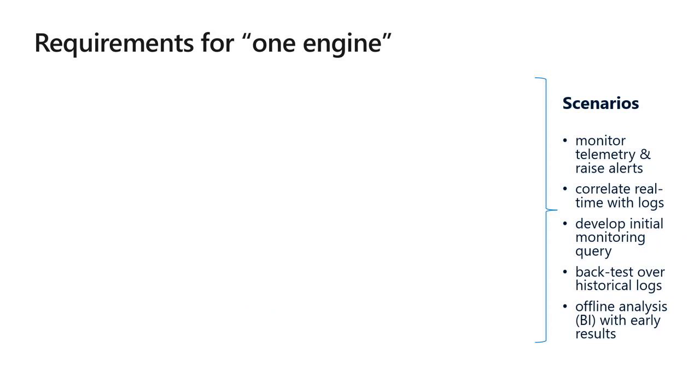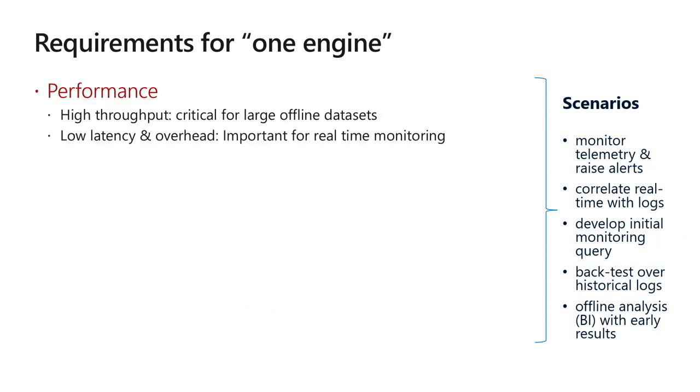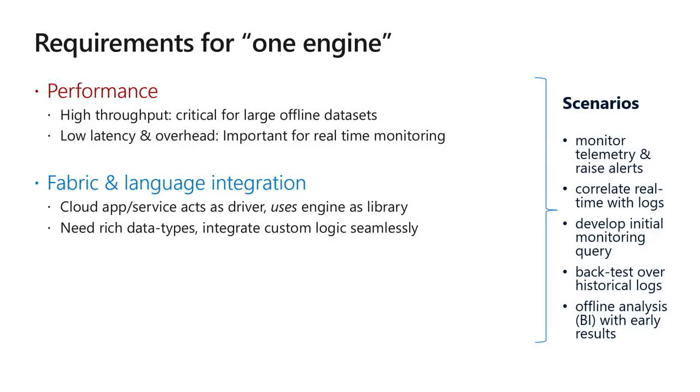We distilled out several key requirements. First is performance — important for both real-time and offline analytics, especially for offline where you take large amounts of data and want interactive responses in tens of seconds or minutes. You also want low latency for real-time. Fabric and language integration was another requirement — we wanted to build a streaming engine as a library that could be embedded in a variety of distributed fabrics, supporting rich data types beyond the SQL data type system.